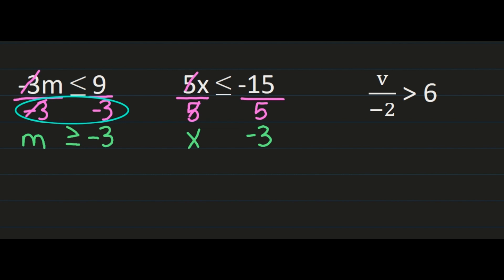Here we divided by a positive — we divided negative 15, but the step we took was dividing both sides by a positive. So we are not going to flip that inequality sign. Our answer is x is less than or equal to negative 3.